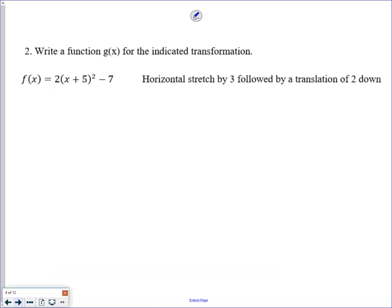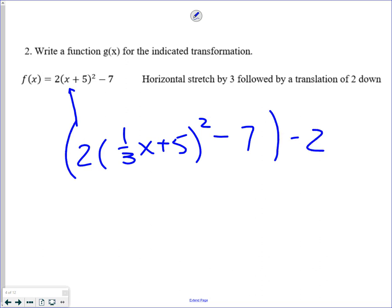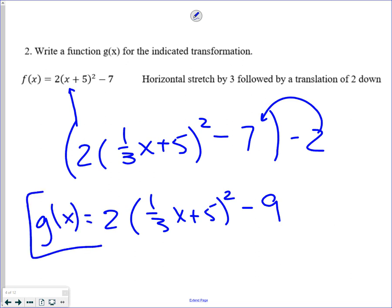Next one. I'm going to do a horizontal stretch by a factor of 3. That means I replace x with 1 third x. Notice that I don't touch anything else. Then a translation down 2 means you're going to take the entire function, minus 2. Which means, really, all you're doing is subtracting it at the end there. So 1 third x plus 5 squared minus 9 is the g function.